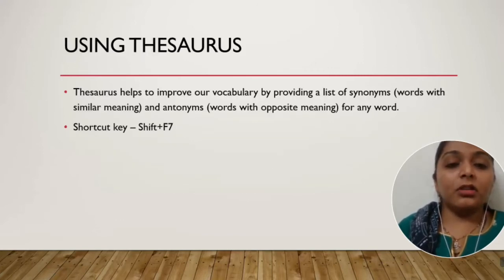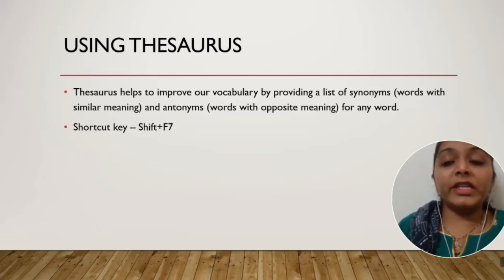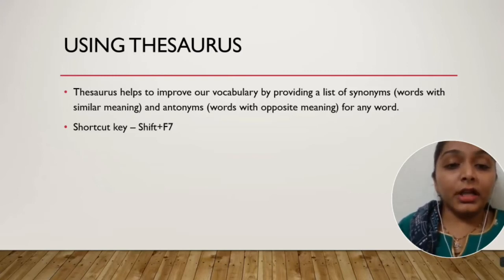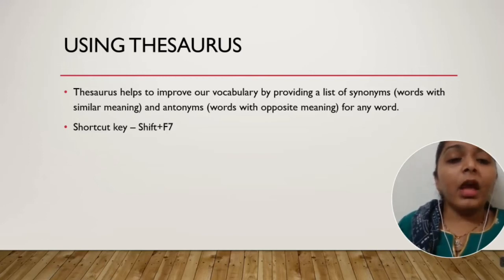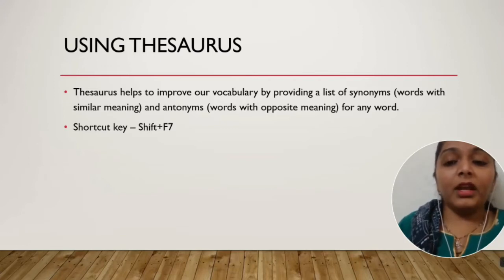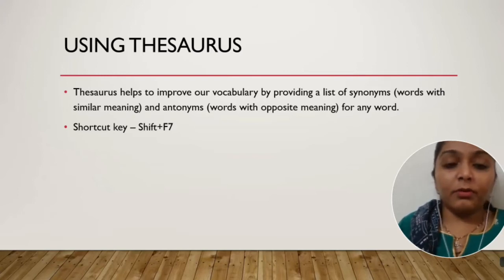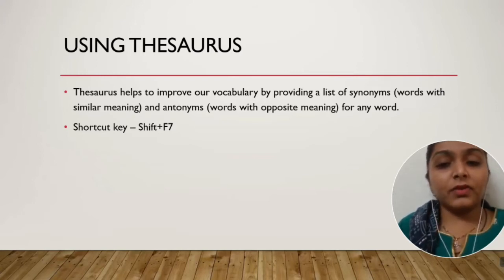The next topic is using the Thesaurus. Thesaurus helps to improve our vocabulary by providing a list of synonyms — words with similar meanings — and antonyms — words with opposite meanings — for any word. The shortcut key is Shift+F7. We can improve our vocabulary by getting the list of synonyms and antonyms in Word as well.